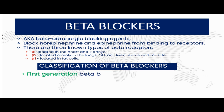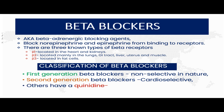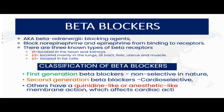Let's classify beta blockers. We can classify them into three classes. There are the first generation beta blockers, which are non-selective, meaning they work on both beta-1 and beta-2 adrenergic receptors. The second generation beta blockers are cardioselective, meaning they work by blocking the beta-1 adrenergic receptors in the heart. Other beta blockers have a quinidine-like or anesthetic-like membrane stabilizing action which affects the cardiac action potentials. We also have third generation beta blockers.